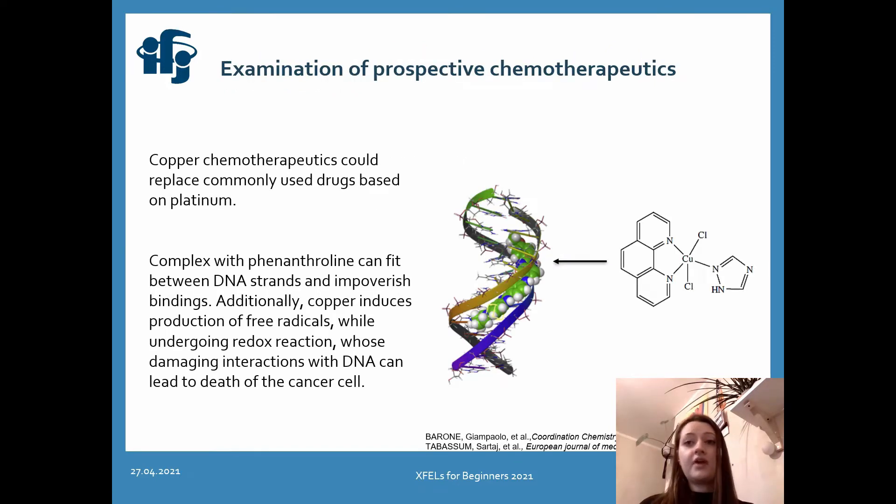In this case, I'd like to show you how to perform the examination of prospective chemotherapeutics. We believe that copper chemotherapeutics could replace commonly used drugs based on platinum in that way that they could reduce the amount of side effects or the cost of production. It was observed that a complex of copper and phenanthroline, like this I presented you on the right side of the slide, can fit between DNA strands and impoverish bindings. Additionally, it was noticed that copper induces the production of free radicals while undergoing some redox reaction, in which copper changes its oxidation number, and this kind of free radicals can damage the structure of the DNA and lead to death of the cancer cell.